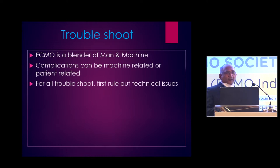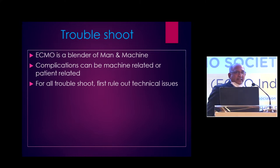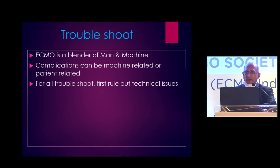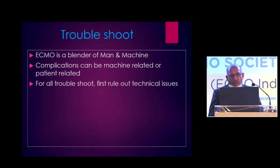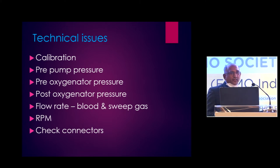Whenever you are dealing with any troubleshooting, you have to keep in mind that this is a blend of man and machine. So it can be a problem with the patient itself or a problem with the machine. Technical issues are very common, probably easy to identify, and probably dreadful. You have to always think of and rule out technical issues first because they are easy to diagnose and when they occur they are usually life threatening. If there are no technical issues then you can have time to think and treat.